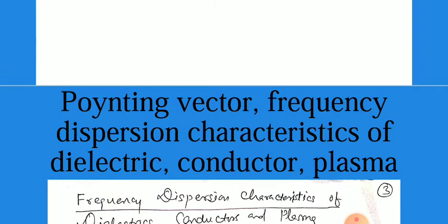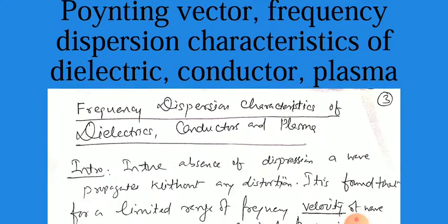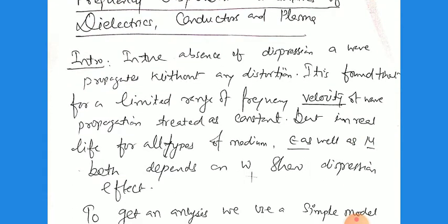This is all about the plane wave in the non-conducting medium. Now we switch over to the second topic for today, that is the frequency dispersion characteristics of dielectrics, conductors, and plasma. What is the introduction? Why do we need the dispersion? Why do we need the frequency dependence?